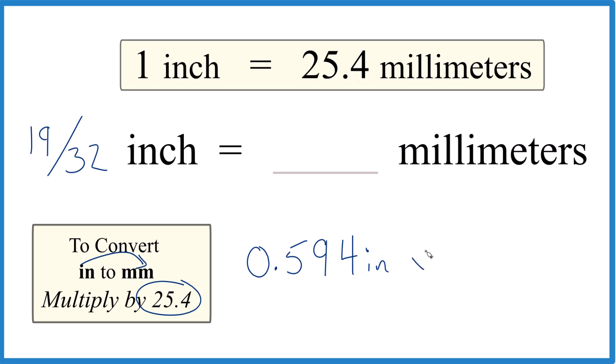And we multiply inches by 25.4, and that's 25.4 millimeters in one inch, so millimeters per inch. So 25.4 times 0.594, that gives us 15.0876.